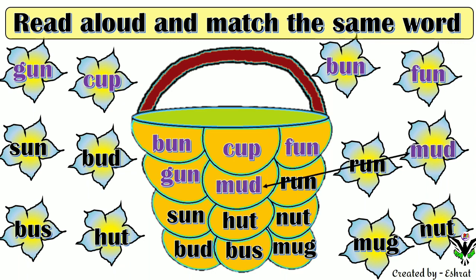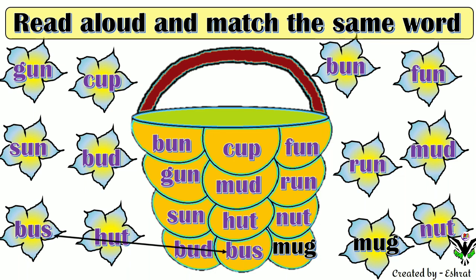M-U-D, mud. B-U-S, bus. R-U-N, run. S-U-N, sun. H-U-T, hut. N-U-T, nut. B-U-D, bud. B-U-S, bus. M-U-G, mug. Match these pairs in your book and practice reading the words.